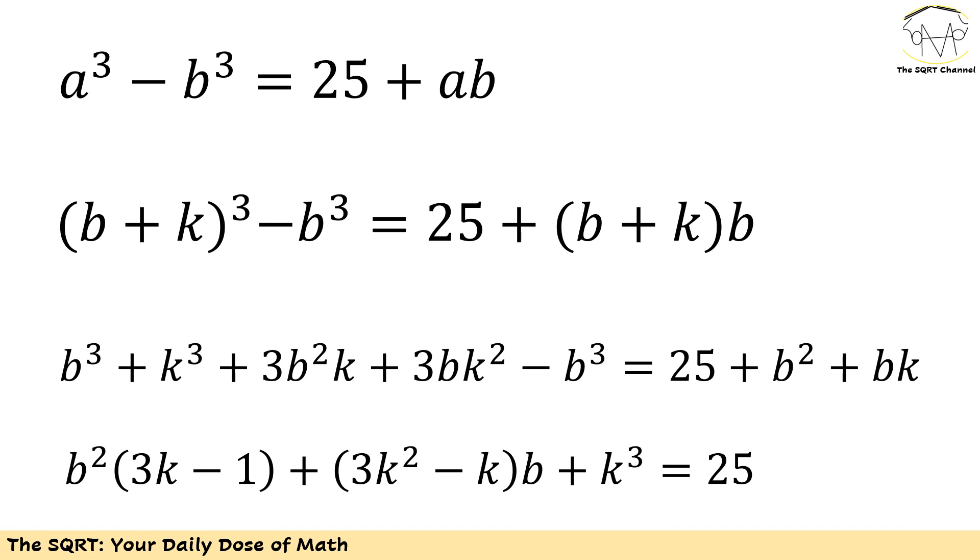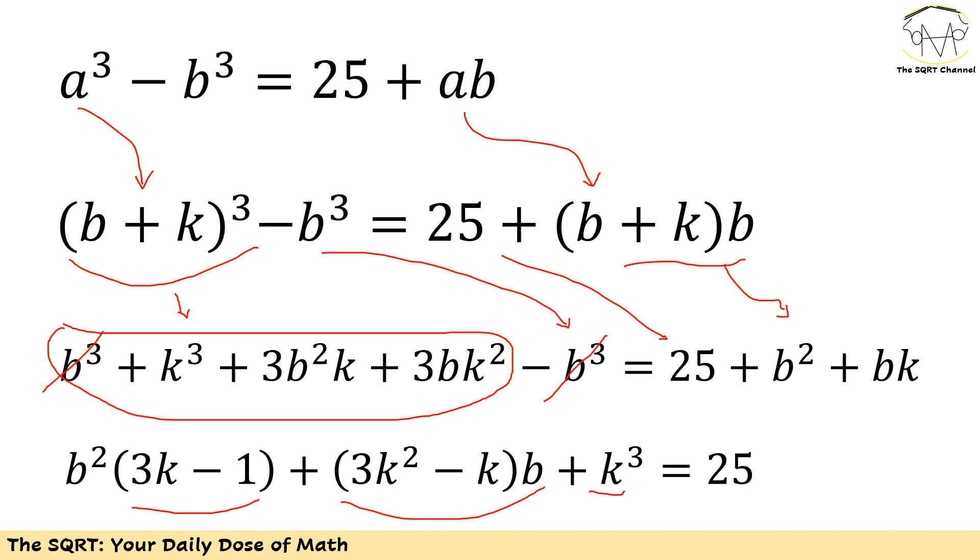Replacing a with b plus k I'm going to start to simplify everything that I have here. I will end up with b³ plus k³ plus 3b²k plus 3bk² minus b³ equals 25 plus b² plus k² plus kb. Now let's remove b³ from both sides, move everything to the left hand side except for 25 and then factor out common terms. At the end I will have b²(3k - 1) plus (3k² - k)b plus k³ equals 25.